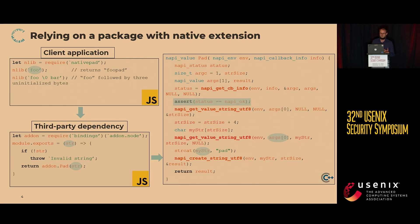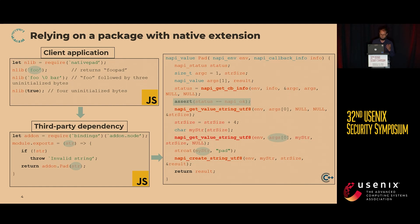Interestingly, if you put the null terminator into the string, this confuses the strcat operation in the C code and results in some information being lost. If you pass invalid arguments — not a string but a boolean — this results in uninitialized bytes leaking into the JavaScript code. Or if you pass complex objects with a toString property set to a number, this will crash the entire Node.js process, leading to availability problems.